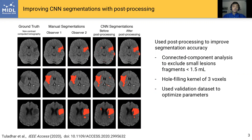To improve the CNN segmentations, we performed post-processing using a connected components analysis to exclude small lesion fragments under 1.5 milliliters and a hole-filling kernel of three voxels. We optimized these parameters using the validation set. You can see qualitatively that post-processing improves the CNN segmentations.